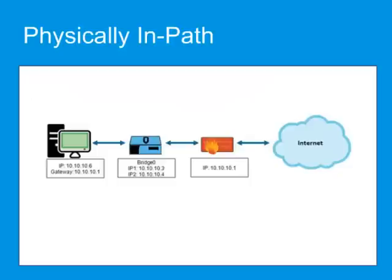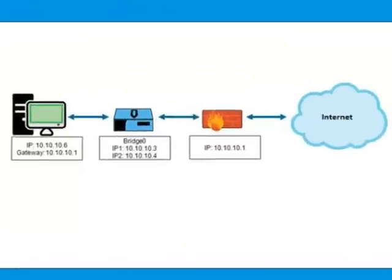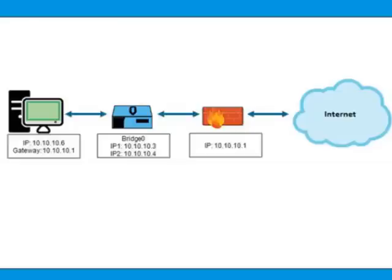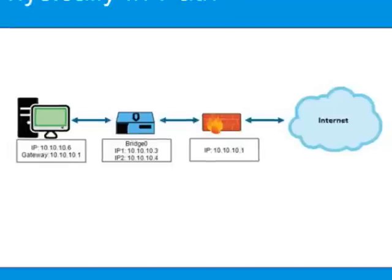An in-path transparent deployment allows the ProxySG appliance to handle all traffic flowing from your user network to the Internet. All traffic flows through the appliance, but only interesting traffic is processed and subjected to policy. This deployment method places the ProxySG appliance in the physical network path between users and the Internet egress point using two bridged interfaces on the appliance. These interfaces handle traffic without redirection.